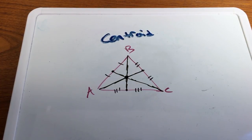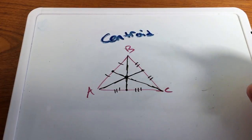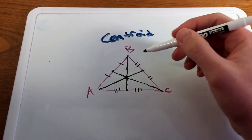Again, for acute, obtuse, and a right triangle, the centroid will always be inside of the triangle, can never be outside of the triangle. That's one thing that's always good to note.